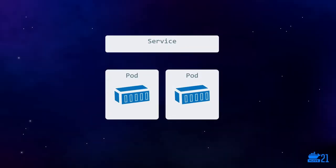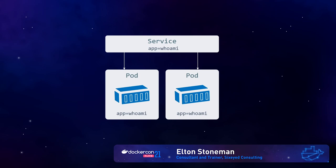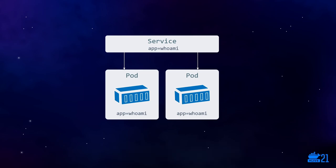You can think of services as a software router. The service has its own DNS name and its own IP address, and it has a label selector to identify the pods it's going to route traffic to. Any number of pods can have that matching label and the service will load balance requests between them. You can create pods manually, but pods have to have a unique name — so if I wanted to scale up my whoami application I would need another YAML specification for another pod with a different name. That's not a very scalable approach, and Kubernetes has another object for that.